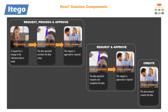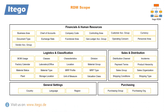The following slide provides an overview of all available ITEGO RDM objects. The major ones are in Financials and Human Resources: Account Groups, Company Codes and the newest object Exchange Rate. For Logistics: Material Groups, Plants and Unit of Measure. For Sales and Distribution, for example: Payment Terms, Product Hierarchies and Sales Organization. In General Settings: Country, Regions and Languages. And in Purchasing, for example: Purchasing Organizations and Groups.